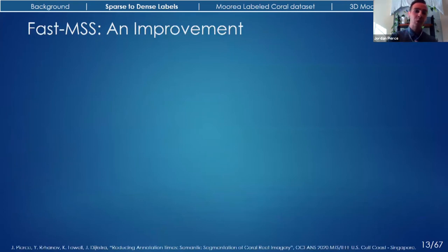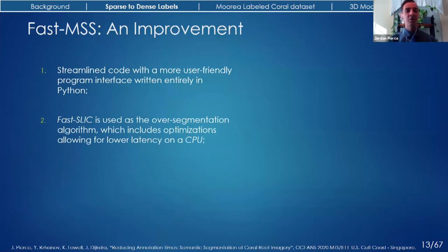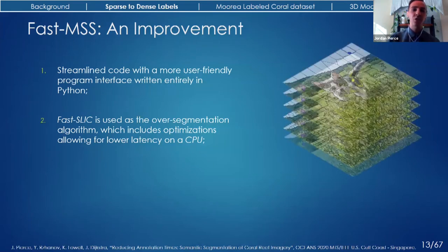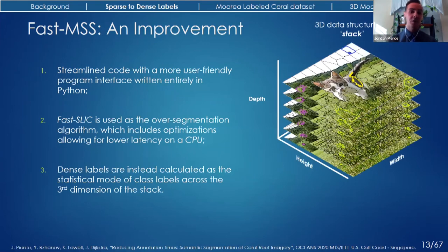For my first chapter, I made an improved version of this algorithm, which I refer to as Fast MSS. The first improvement was a complete overhaul on how the algorithm was written, and I included an easy-to-use API written entirely in Python. I also used a different over-segmentation algorithm — a variant called Fast SLIC, which performs wickedly fast even on an ordinary CPU due to optimization techniques. Finally, I changed how the labels made from each iteration are combined together. I treated these as entries into a three-dimensional data structure or stack, and created a set of dense labels by calculating the statistical mode of class labels across the third dimension of the stack.